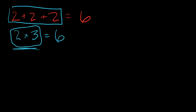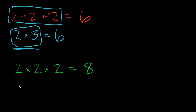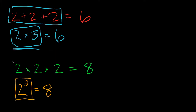We can do the same thing with multiplication. If I wanted to know what 2 times 2 times 2 is — well, 2 times 2 is 4, and then 4 times 2 is 8. But we have a shorthand way of doing this also, and that's with exponents. We would just write 2 raised to the third power, or 2 cubed. This is also equal to 8. So this is a shorthand version, but they are both equivalent statements. That's all an exponent is.